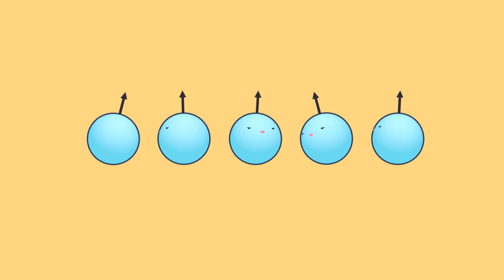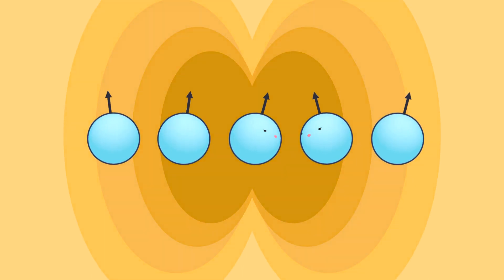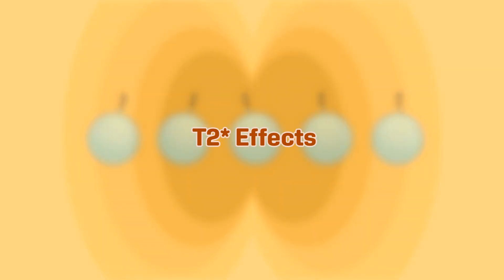Because each proton already experiences the magnetic field differently than its neighbors, any inhomogeneity in the magnetic field makes dephasing, and thus signal dropout, even worse. These are called T2 star effects.